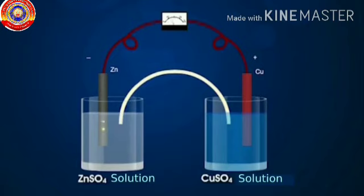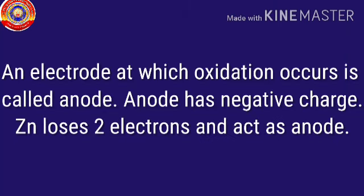However, the transfer of electrons produced by this redox reaction causes the flow of electric current in the cell. Hence, it acts as a source of electricity. In this reaction, zinc loses two electrons and becomes Zn2+ ions. That is, oxidation takes place. An electrode at which oxidation occurs is called anode. In galvanic cell, anode has a negative charge.